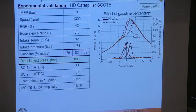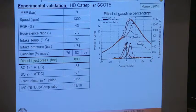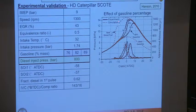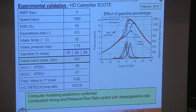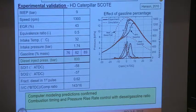Very good agreement was obtained between the experimental results and the simulation. Running with neat gasoline would produce no combustion at all in this operating condition. Running with neat diesel, the combustion would have occurred very early with extremely high pressure rise rates — the lab guys would have been right. But by blending the two fuels appropriately, we can control the heat release event both in terms of timing and magnitude. The computer modeling predictions were confirmed, giving confidence in the models. Combustion timing and pressure rise rate could be controlled by changing the diesel-to-gasoline ratio and injection timings.